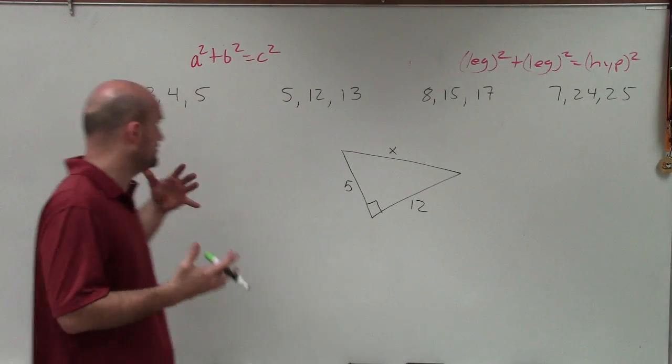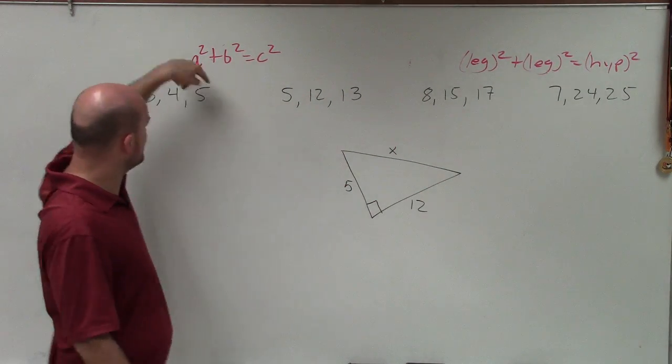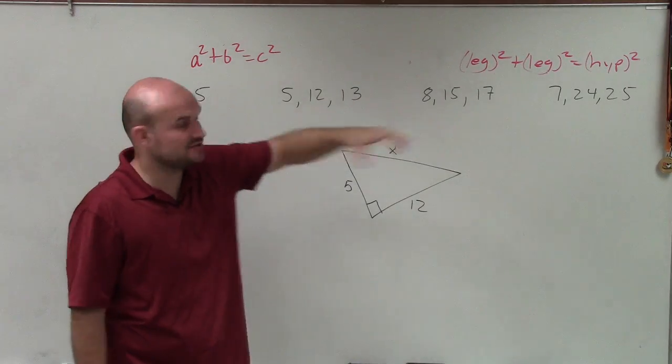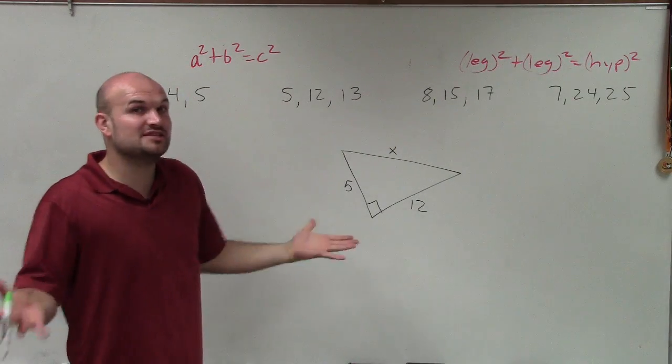What's helpful about Pythagorean triples is each one of these numbers where the largest number is always going to be the hypotenuse. When you apply the Pythagorean theorem, these create right triangles.